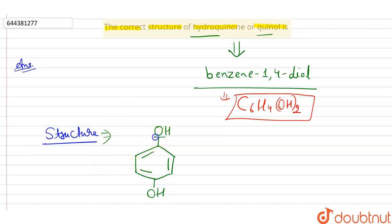So this is the structure of hydroquinone or quinol and you can clearly see from the structure two hydroxyl groups. This is a hydroxyl group and this is also a hydroxyl group. So these two are bonded to this benzene ring in a para position.